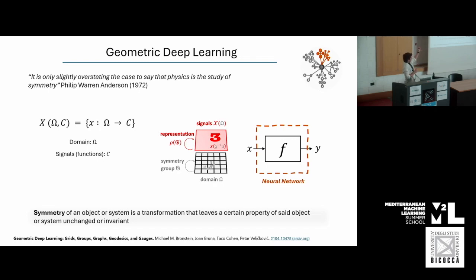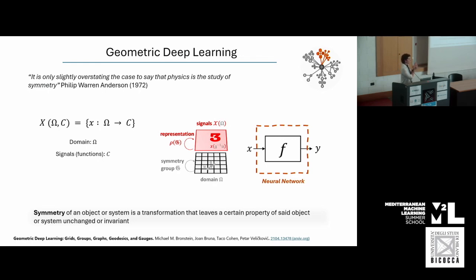In geometric deep learning, we're looking at a certain domain in which there are certain signals. What neural networks do is approximate a highly parameterized function mapping from an input to a certain output. To be more specific: if we look at a picture of the number three, that picture is a signal on top of a grid domain — a homogeneous grid of pixels. What we want our machine learning model to do is define the label — recognizing this as number three.